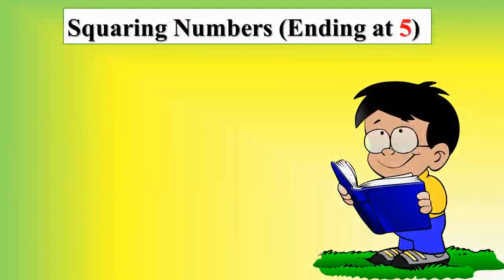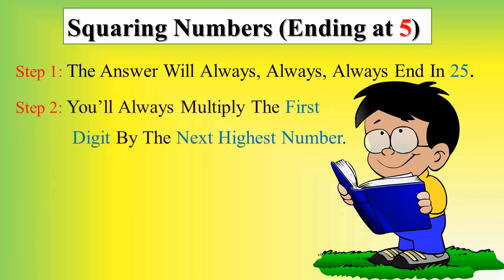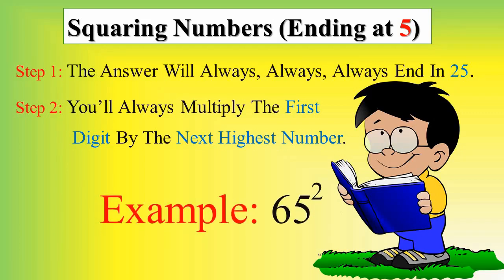Squaring numbers ending at 5. Step 1: The answer will always, always, always end in 25. Step 2: We will always multiply the first digit by the next highest number. For example, we have squaring 65 here.